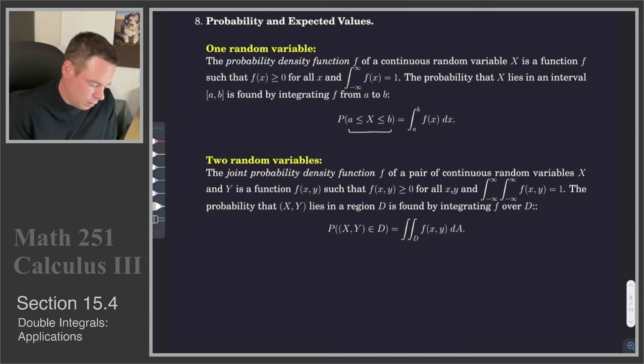We can extend this idea to two random variables. The joint probability density function of a pair of random variables, capital X and capital Y, is a function of two variables which is positive and has an integral of 1 where you're integrating over the entire plane. The probability that your pair of random variables takes on a value inside the region D is found by integrating your probability density function over that region D.